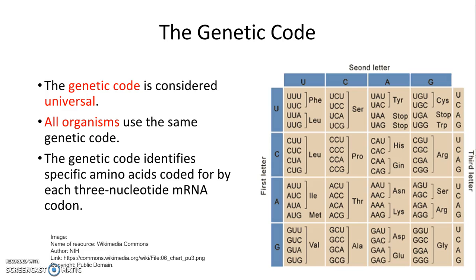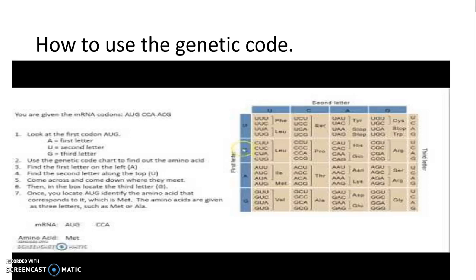The genetic code identifies specific amino acids coded for by each three nucleotide mRNA codon. So whenever you have the three letters, for example, AUG, that's a codon for mRNA. And then you're going to use that in order to use this chart to find out what amino acid you will have, and that will be the word. A lot of times they're abbreviated on the chart, so MET is methionine, and so on. So the next slide, I have a video I created that will show you how to use the genetic code.